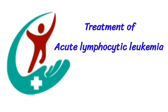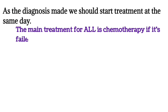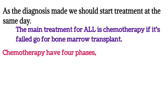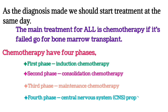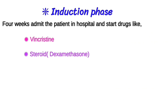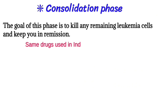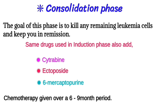Treatment of acute lymphocytic leukemia: once diagnosis is made, treatment should start the same day. The main treatment is chemotherapy; if it fails, bone marrow transplant is considered. Chemotherapy has four phases: induction, consolidation, maintenance, and CNS prophylaxis. The induction phase lasts four weeks; the patient is admitted and given vincristine, steroids (dexamethasone), L-asparaginase, and methotrexate. The consolidation phase aims to kill remaining leukemia cells, using drugs such as cytarabine, etoposide, and 6-mercaptopurine, given over six to nine months.